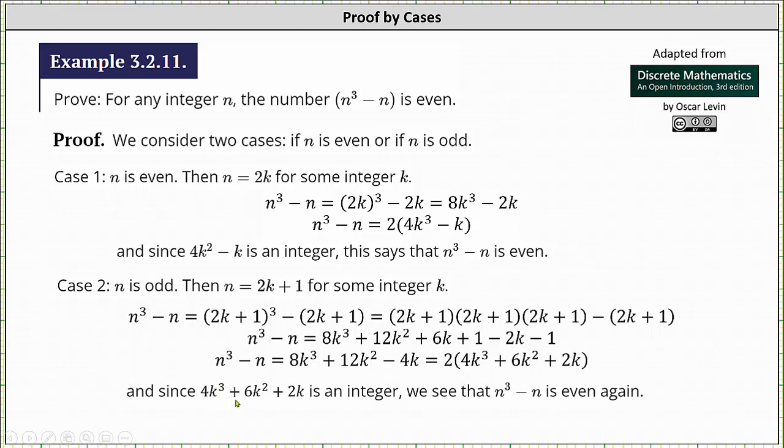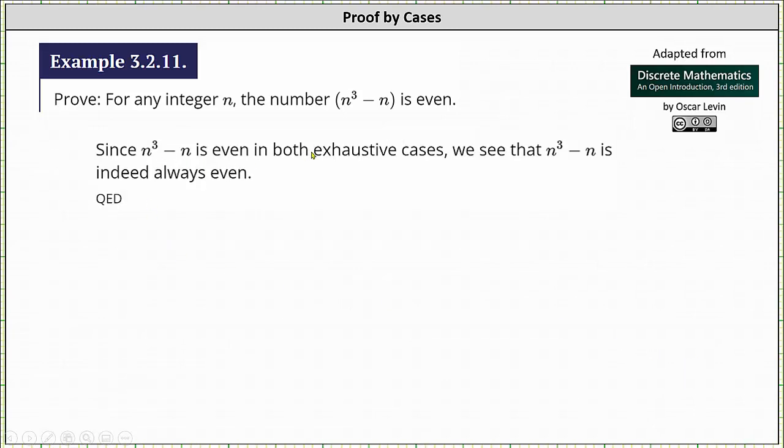Since 4k³ + 6k² + 2k is an integer, and n³ - n is equal to 2 times some integer, therefore n³ - n is even again. Since n³ - n is even in both exhaustive cases, we see that n³ - n is indeed always even, and the proof is complete. I hope you found this helpful.